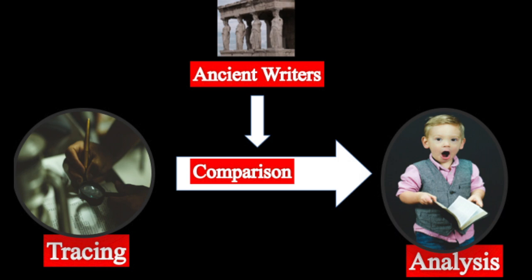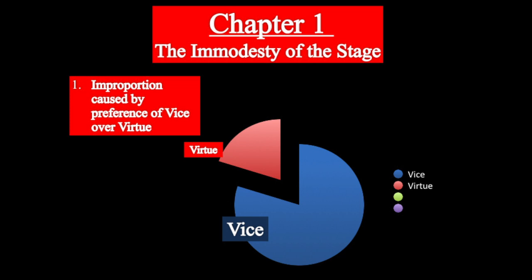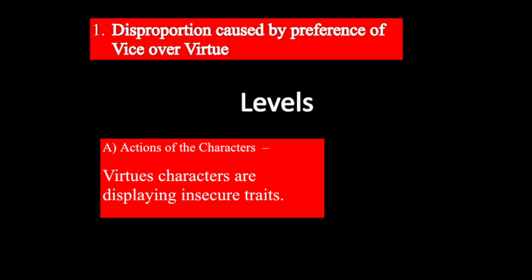This brings us to the very first chapter that Collier has titled 'Immodesty of the Stage.' When he says immodesty, he is basically trying to talk about the disproportion caused by the preference of vice over virtue. This representation is very unacceptable for Collier, because you are actually giving more weight to the wrong things over the good things. This imbalance is an improportion where wrong aspects and wrong materials are given more importance. Collier notices this error at various levels — the first being through the actions of the characters.